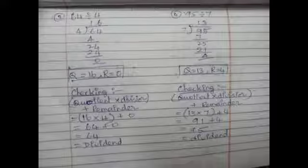Fourth sum: 95 divided by 7. One 7 is 7, 9 minus 7 is 2. Bring down 5 to get 25 — three 7s are 21, 25 minus 21 is 4. Quotient is 13, remainder is 4. Checking: 13 multiplied by 7 is 91, plus 4 is 95, which equals our dividend. Answer is correct.